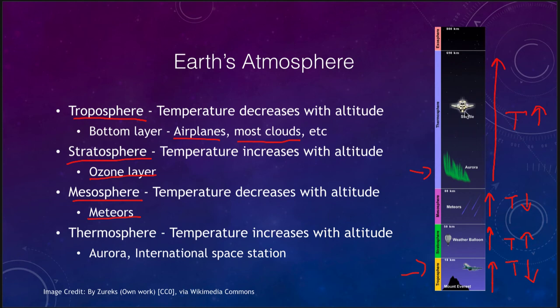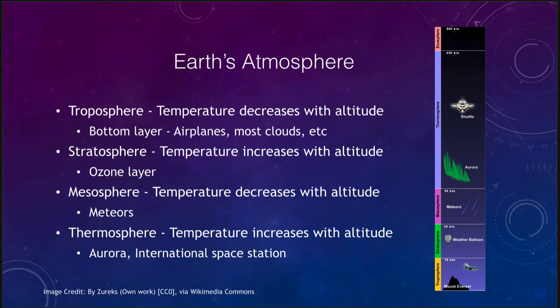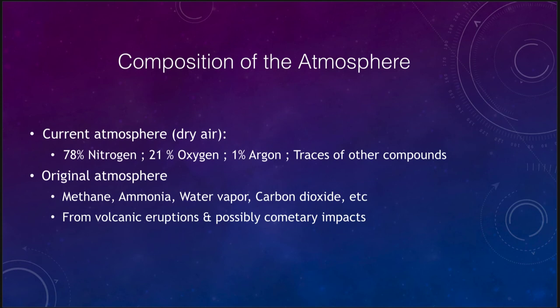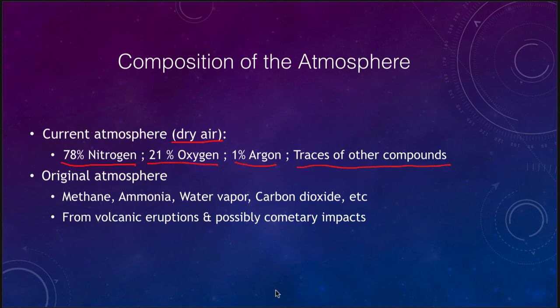When you get this high, you can actually get things in relatively stable orbit — such as the International Space Station, which orbits in the thermosphere. Now, what is the atmosphere made up of? If we look at dry air — and we use dry air because water vapor is very variable, ranging from almost nothing to a couple percent or more — we have 78% nitrogen, 21% oxygen, 1% argon, and everything else is just trace amounts.